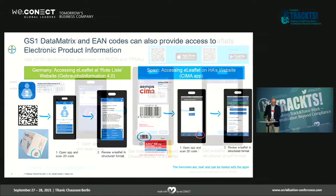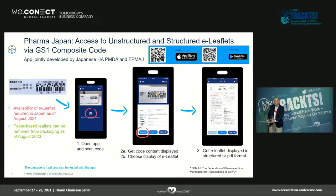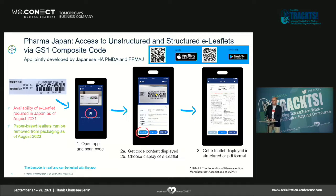The country most advanced in my opinion is Japan. Japan does not use EAN codes or GS1 data matrix — they use GS1 composite code, to be implemented by April this year. They developed an app jointly between the authorities and the manufacturer association. As of August this year, manufacturers must provide leaflets in electronic format, and as of August 2023 it will be allowed to remove the paper-based leaflets from packages, relying fully on electronic product information access.